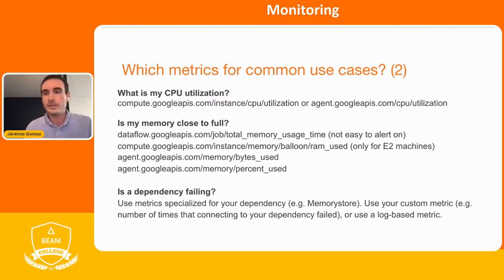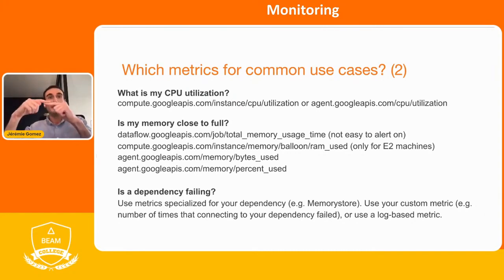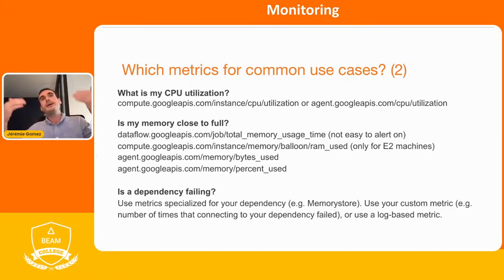The last use case is: is a dependency failing? Let's say you're using a cache like Redis on Memorystore. The first thing you could do is use metrics specialized for your dependency — Memorystore has lots of metrics. But there are other solutions: you could use a custom metric where, every time you connect to your dependency and it fails, you increment a counter and alert on that. Or you could create a log-based metric. In your Beam job, log something like 'could not connect to my dependency,' create a metric based on that log, and alert on it.